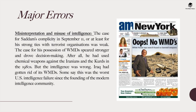However, there were major errors in this campaign. The first was the misinterpretation and misuse of intelligence. The case for Saddam's complicity in September 11, or at least strong ties with terror organizations, was extremely weak. The case for his possession of weapons of mass destruction appeared stronger and drove decision-making — after all, he had used chemical weapons against Iranians and Kurds in the 1980s. But this intelligence was wrong. Iraq had gotten rid of its weapons of mass destruction, and some say this was the worst US intelligence failure since the founding of the modern intelligence community.